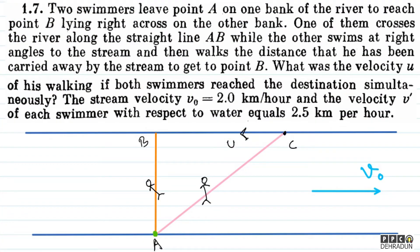Basically, if I look at the ground frame, swimmer number 1 travels along AB. It's quite obvious that to travel along AB in the ground frame, the swimmer must have aimed at an angle — an oblique direction — to compensate for the stream.